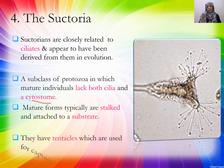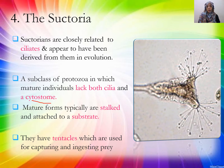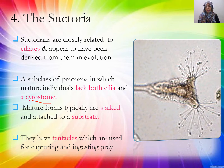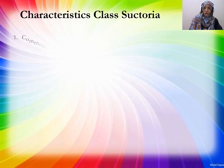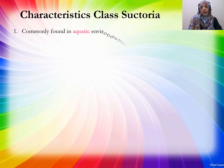They have tentacles which are used for capturing and engulfing prey. There are two types of tentacles: pointed ones used to pin prey, and rounded adhesive knobs used to hold and catch prey. The tentacles engulf the organism through the mouth opening.